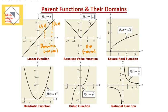This function is f of x equals square root of x — the square root function. As we can see, it starts from zero and extends to infinity; there are no negative values. You cannot have a negative value under the square root because the square root of a negative number gives an imaginary number, which cannot be represented on the coordinate plane. So only positive numbers and zero are allowed. The domain starts from zero and extends to infinity.